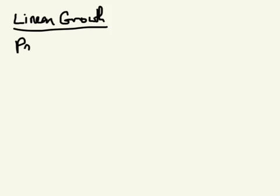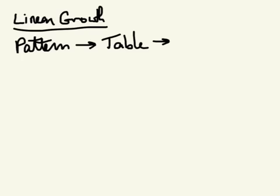We're going to talk about linear growth, which can be represented different ways. We can represent linear growth as a pattern, in a table, and as a rule. We're going to use all three of those representations for a pattern here today. The pattern I'm going to look at is pretty simple — the first figure in the pattern is this.